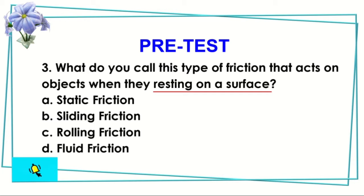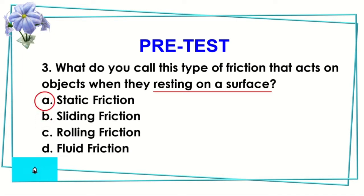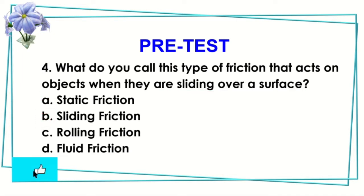Number three: What do you call the type of friction that acts on objects when they are resting on a surface? Our keyword here is resting on a surface. Is it static friction, sliding, rolling, or fluid friction? The answer is static friction.